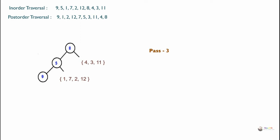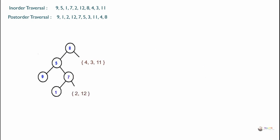Now look at 1, 7, 2, and 12 in post-order traversal — which element is coming first from the end? We can see that element 7 is coming first, so the root will become 7. Locate 7 in in-order traversal: 1 is left of 7, and 2 and 12 are right of 7. So the binary tree can be rewritten with root as 7, left subtree as 1, and 2 and 12 as the right subtree.